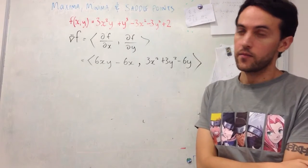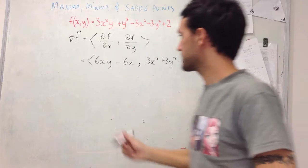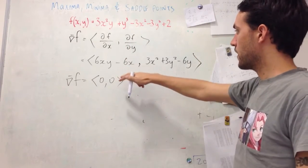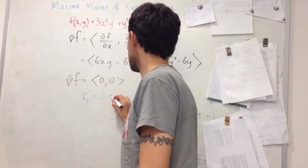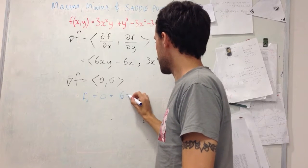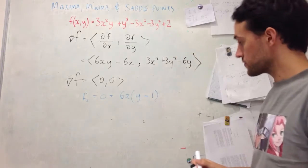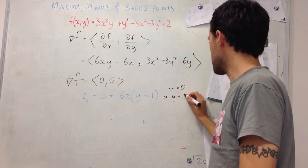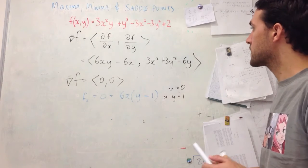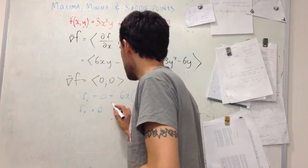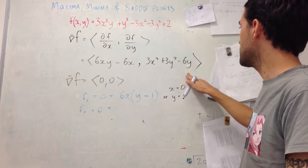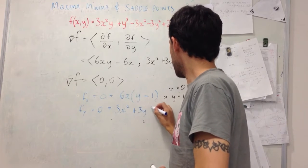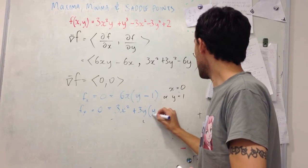What we want to know is when this is simultaneously zero — when does nabla f equal (0, 0)? Looking at those values, I've got to solve: taking fx = 0 and factorizing gives me 6x(y − 1) = 0. So this equals zero either where x equals zero, or y equals 1. Then looking at fy = 0, where we have 3x² + 3y(y − 2) = 0.